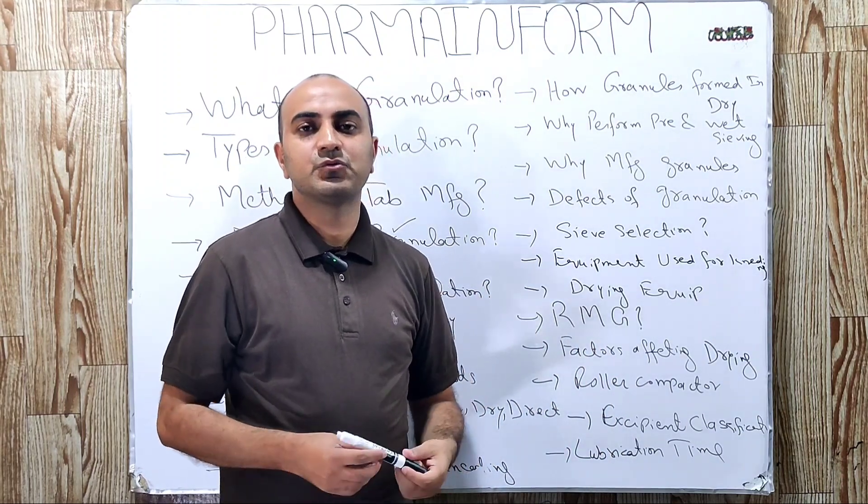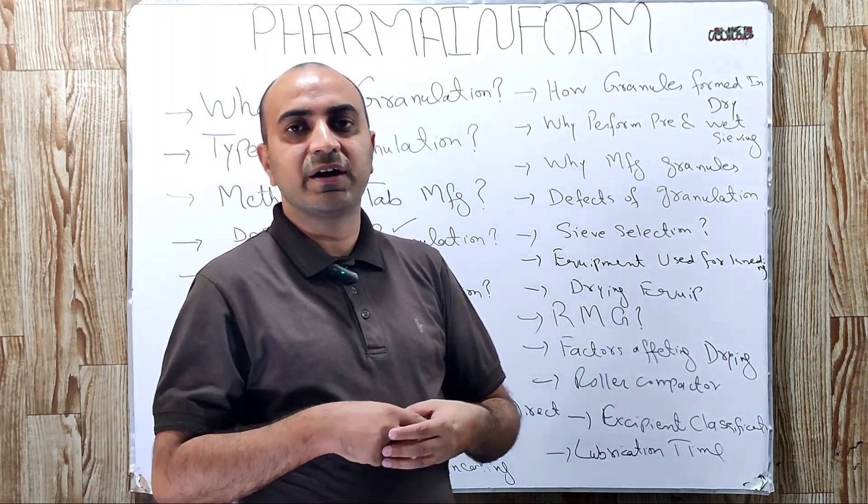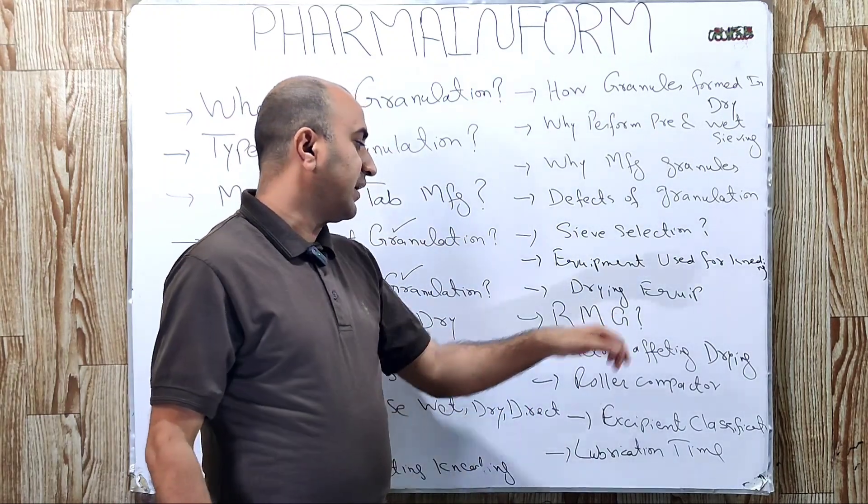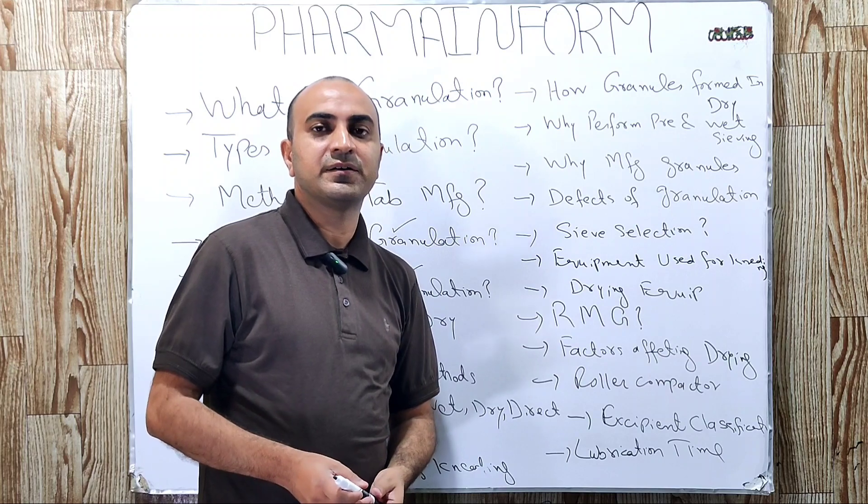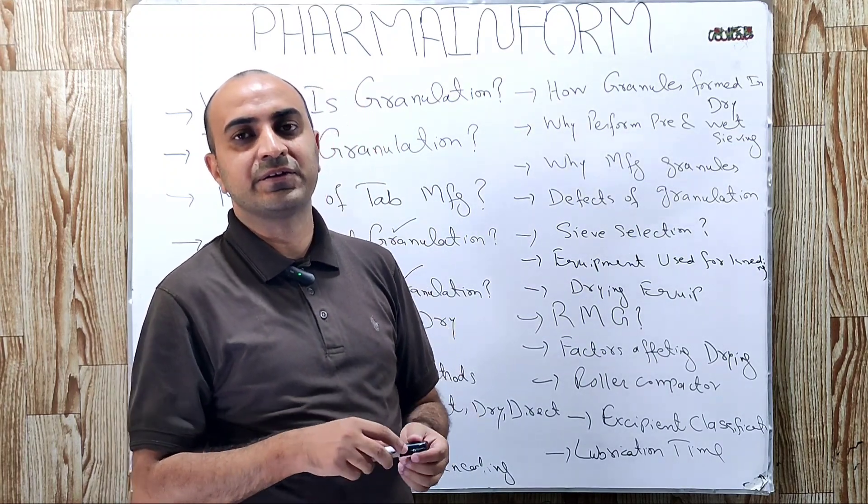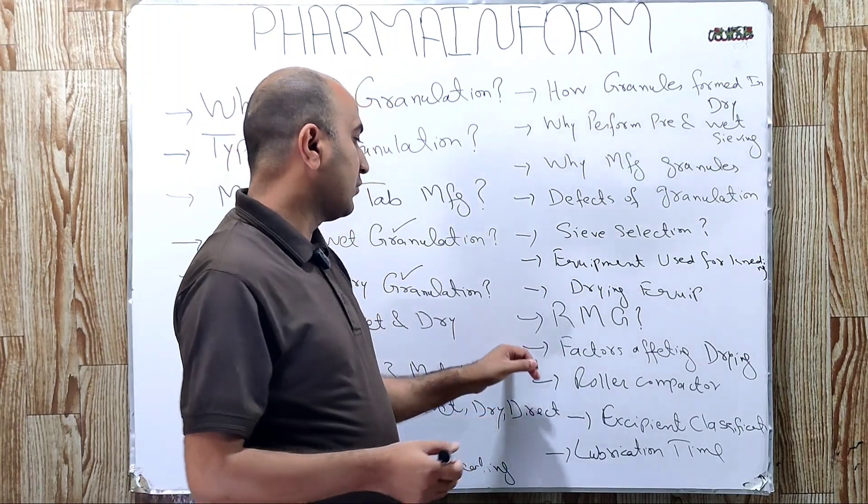Which drying equipments are used during granulation? Usually tray dryers and fluidized bed dryers are used. What is RMG? As we discussed earlier, RMG is used for wetting process and it is rapid mixing granulator.